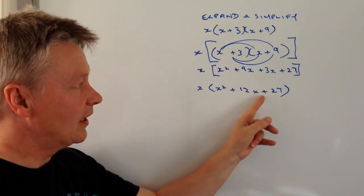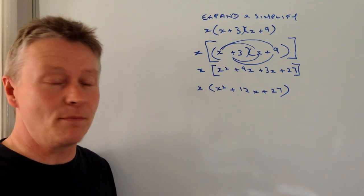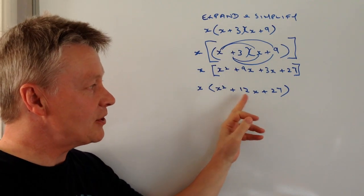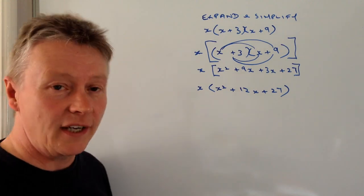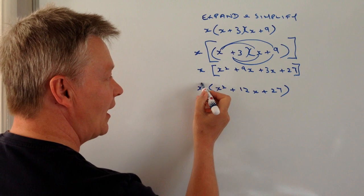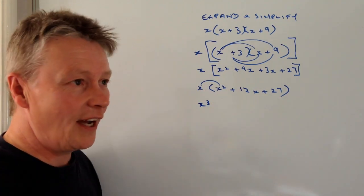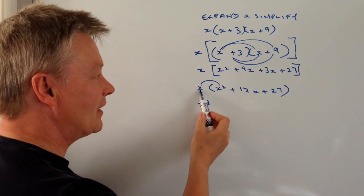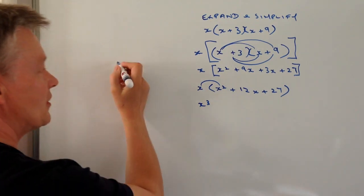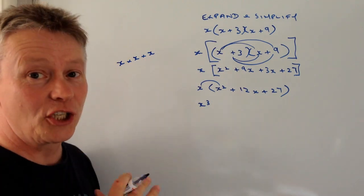So that deals really with the x plus 3 times x plus 9. And then it's really just a matter of multiplying each of these terms by x from the outside. So I'm going to multiply x times x squared. Well, that's going to be x cubed. And just be very careful that x times x squared is the same as saying x times x times x, which is x cubed.